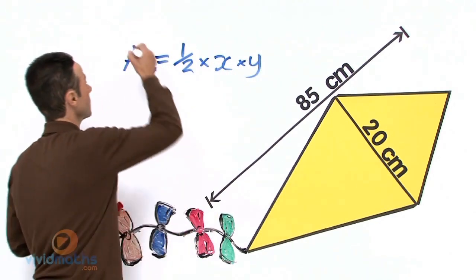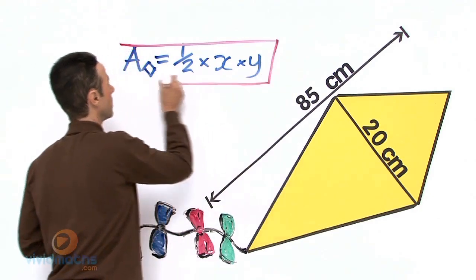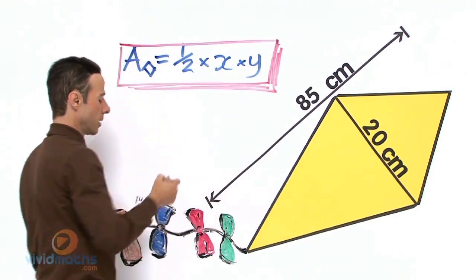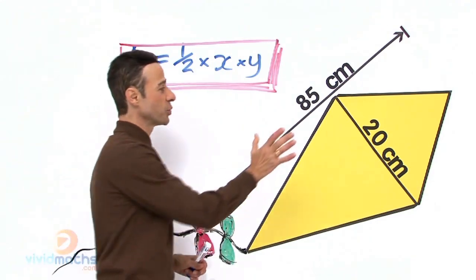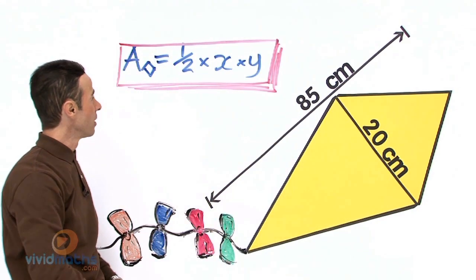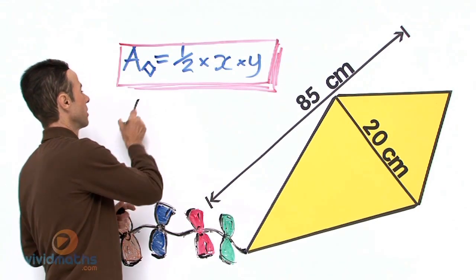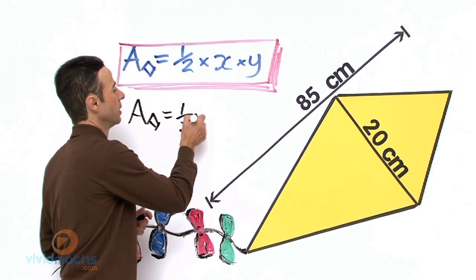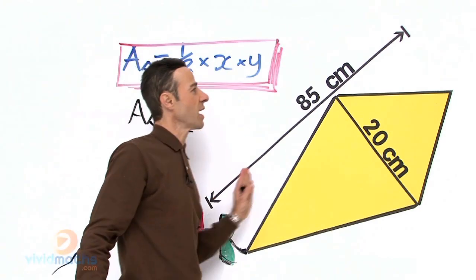Let's drag and drop and put all the values we have into the formula - a rather simple process. First of all, let's write one-half, then the first diagonal, which is x straight across.